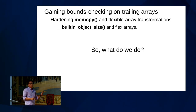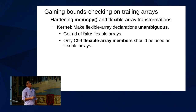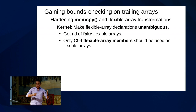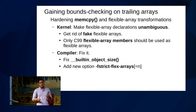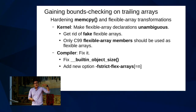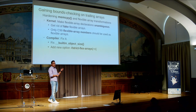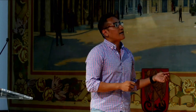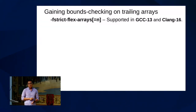On the kernel side, what we can do is complete the transformation of fake flexible arrays into proper C99 flexible array members. On the compiler side, we need to find a way to fix that builtin function. Another option is to add a new compiler option: f-strict-flex-arrays. The good news is that now we have this option — GCC and Clang have both added it. We already have this option in GCC 13 and Clang 16.